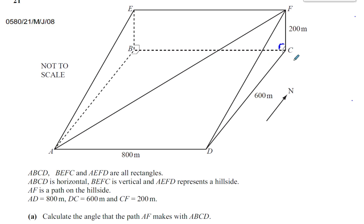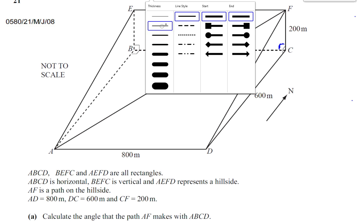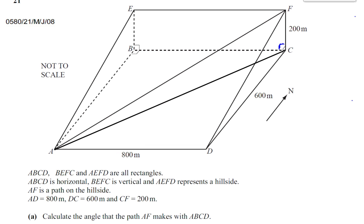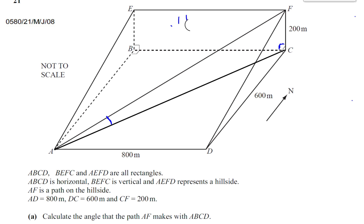What we can do is draw a line joining A to C. The angle between line AF and plane ABCD is the angle between line AF and line AC - it's the angle CAF. You can think of it as: if there was a light shining from above, where would the shadow of this line fall on the plane? It would fall from A up to C. So the angle between the line and the plane is like the angle between the line and its shadow on the plane.